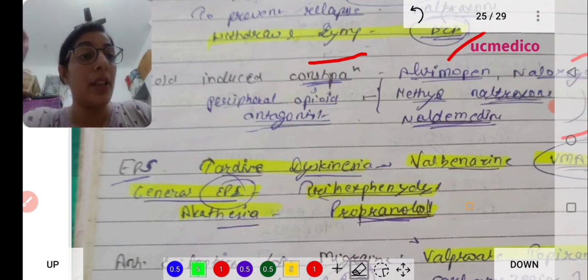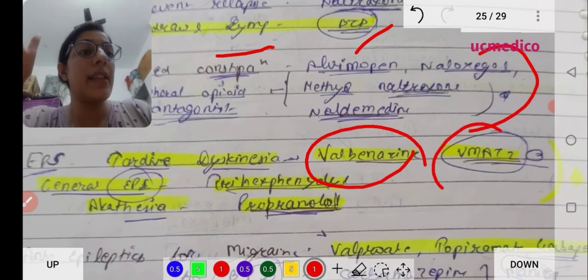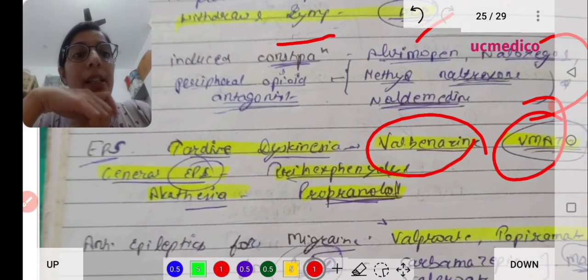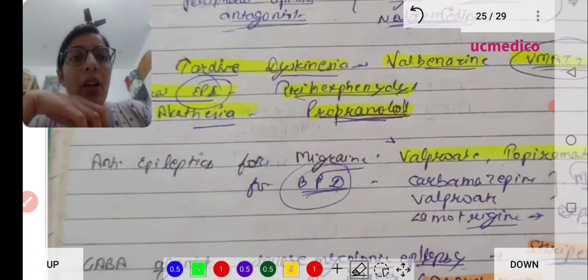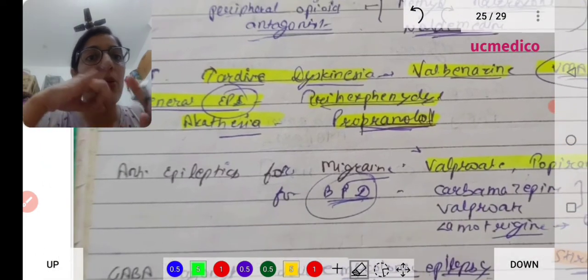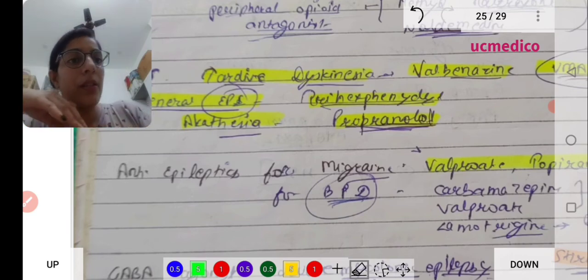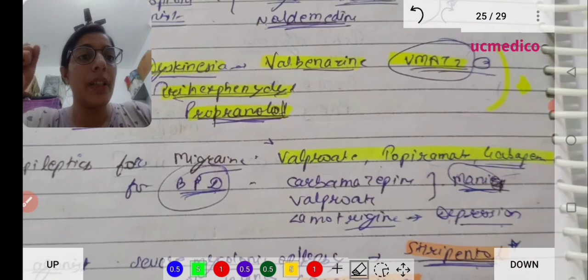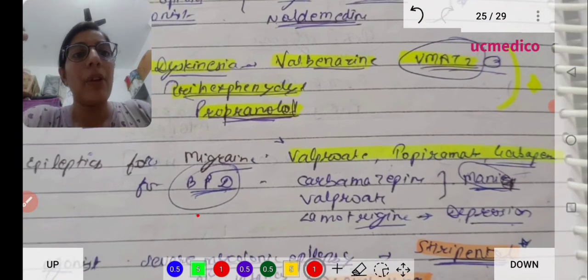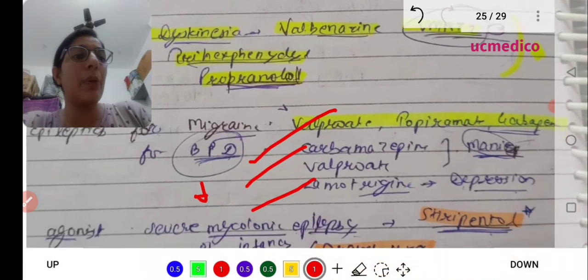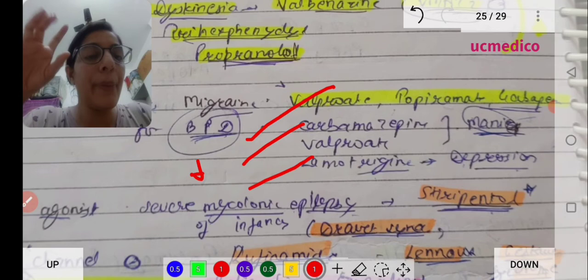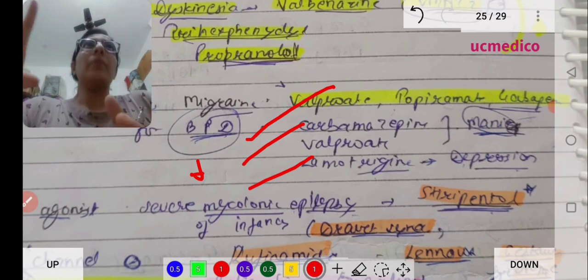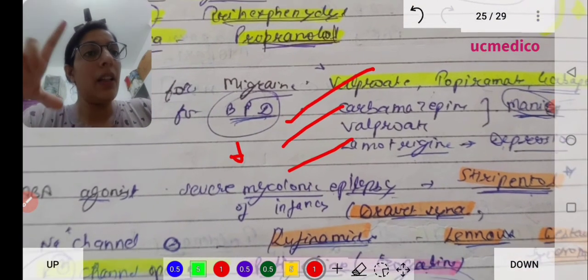For tardive dyskinesia, we give valbenazine, a VMAT2 inhibitor. For general extrapyramidal syndrome, we give trihexyphenidyl, an anticholinergic. For migraine, we already did monoclonal antibodies. Few drugs - valproate, topiramate, gabapentin. For bipolar disorder, carbamazepine, valproate, lamotrigine. Lamotrigine is also given for depression. Valproate is given in almost every kind of psychotic disorder except in typical absences. In atypical, we give valproate.